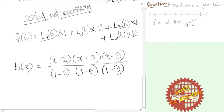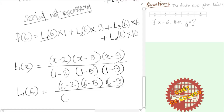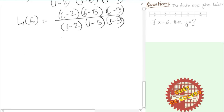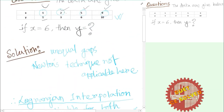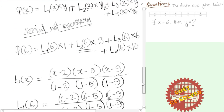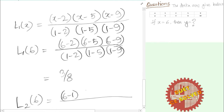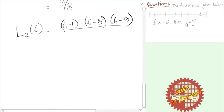We want L1(6), so we substitute x = 6. The numerator becomes (6-2)(6-5)(6-9) and the denominator is (1-2)(1-5)(1-9). After calculating using a calculator, L1(6) equals 3/8. Similarly for L2(6), the numerator is (6-1)(6-5)(6-9) and the denominator uses x2 = 2, giving (2-1)(2-5)(2-9), and L2(6) = -5/7.